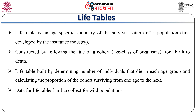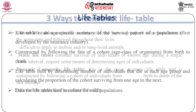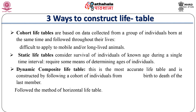Life table is an age-specific summary of the survival pattern of the population. Tables are prepared by taking into account different features such as age class, proportion of organisms surviving at a later stage, dying at a stage, and total lifespan. The whole lifespan is divided into different segments and the number of individuals falling under these segments is termed a cohort. Life tables are built by determining the number of individuals that die in each age group and calculating the proportion of the cohort surviving from one age to the next. Data for life tables are hard to collect for wild populations.